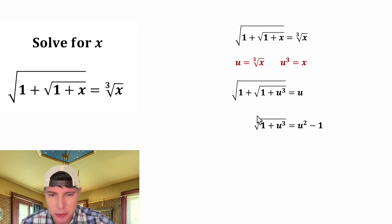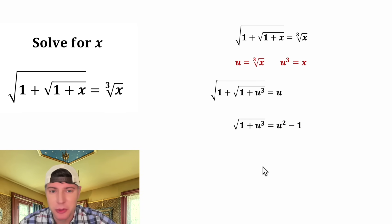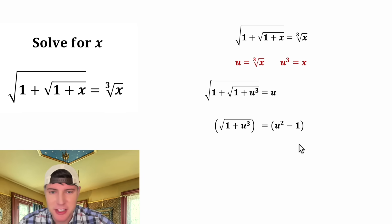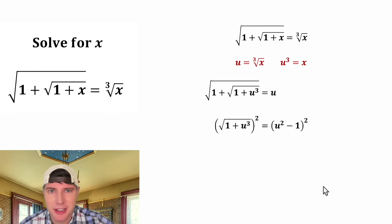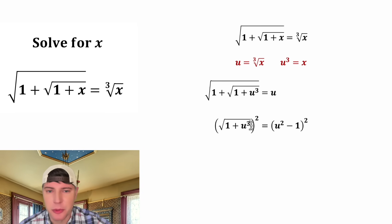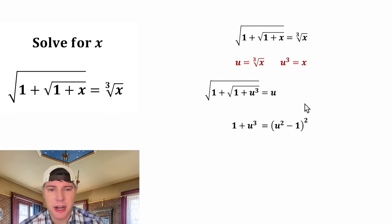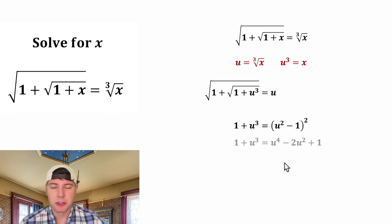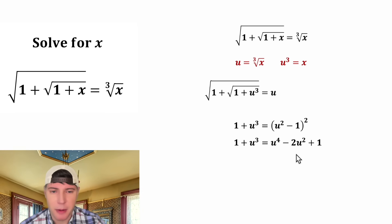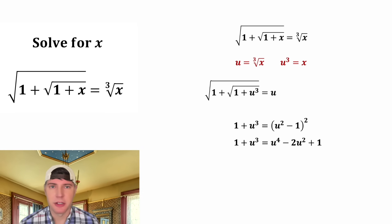Now I want to get rid of this square root, so let's put both sides into parentheses and square both sides again. On the left-hand side, this square root and this square will cancel each other out. And on the right-hand side, after you multiply that out, you get u to the fourth minus 2u squared plus 1.